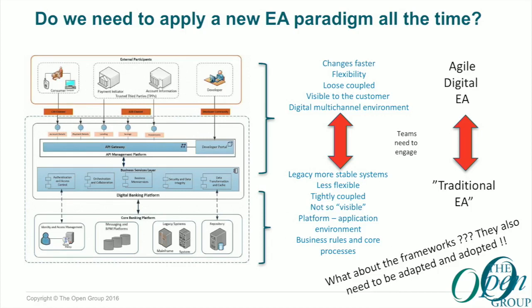A similar situation exists in government: some information is sensitive and subject to rules and legislation, while another layer needs to provide services to citizens that are quick and accessible. At the end, we need to understand how different teams of architects should work together. Some may be working in a more old-fashioned way, while others facing the customer should be more agile. This applies not only to enterprise architecture, but in general to the way you handle your business.